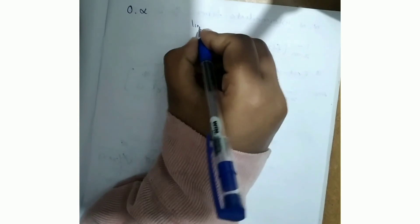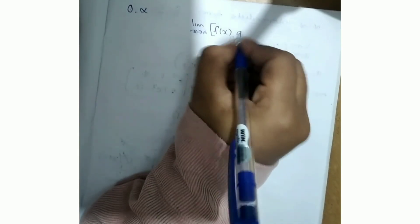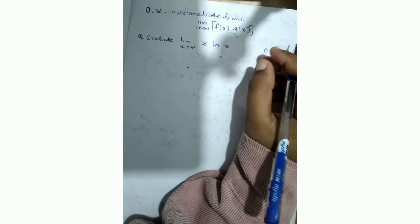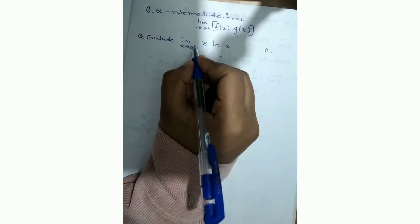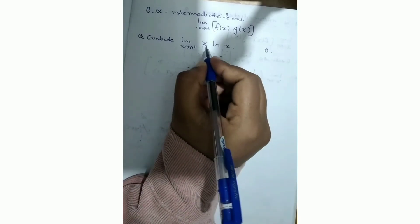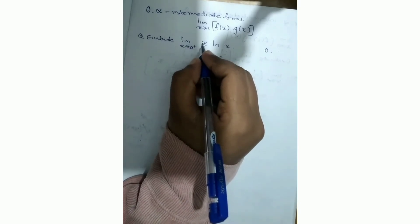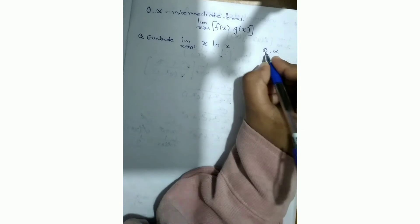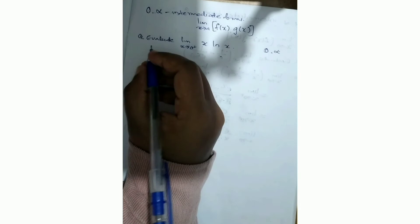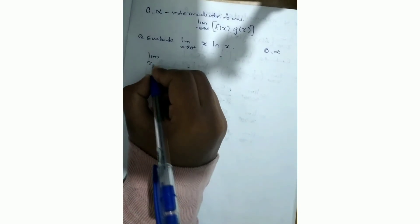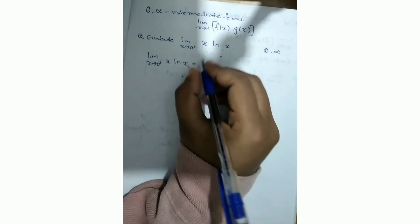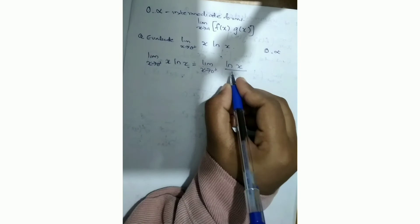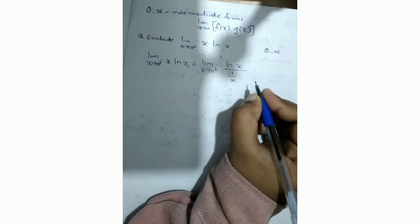Now we have the 0 into infinity indeterminate form: limit x tends to a of f(x) × g(x). For example: evaluate limit x tends to 0+ of x·ln(x). This is 0 × ∞ form, since x → 0 and ln(x) → -∞. We rewrite it as limit x tends to 0+ of ln(x) divided by (1/x), which is the ∞/∞ form.